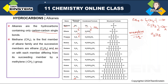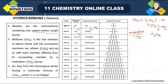Methane is the first member of the alkane family, and successive members increase the number of carbons, each differing from the previous by a methylene group CH₂. They form a homologous series. The general formula is CₙH₂ₙ₊₂, where n is an integer. When n=1: CH₄; n=2: C₂H₆; n=8: C₈H₁₈ (since 2×8+2=18).